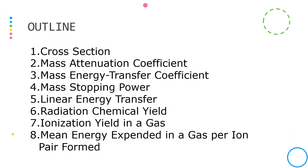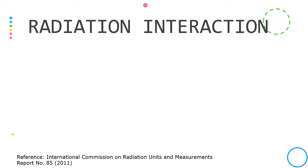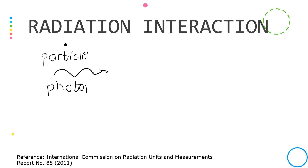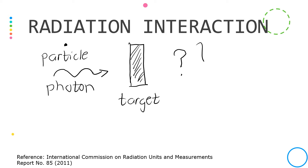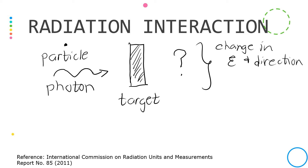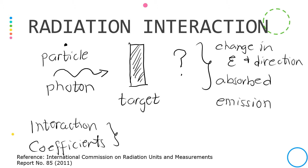These are the quantities that we will discuss in this lecture. Ionizing radiation can be a particulate radiation — charged or uncharged — or a photon such as X-ray or gamma-ray. Once it interacts with a certain target, possible outcomes include a change in its energy and direction, absorption due to the interaction, or emission of one or several secondary particles such as secondary electrons or delta rays. The likelihood of such interactions is characterized by interaction coefficients, which refer to a specific interaction type and depend on the energy and the target material.